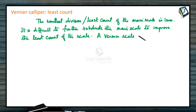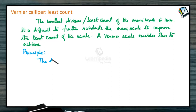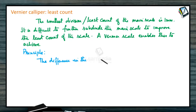A vernier scale enables this to be achieved. The principle behind it: the difference in the magnitude of 1 main scale division and 1 vernier scale division is called the least count of the instrument, as it is the smallest distance that can be measured using the instrument.